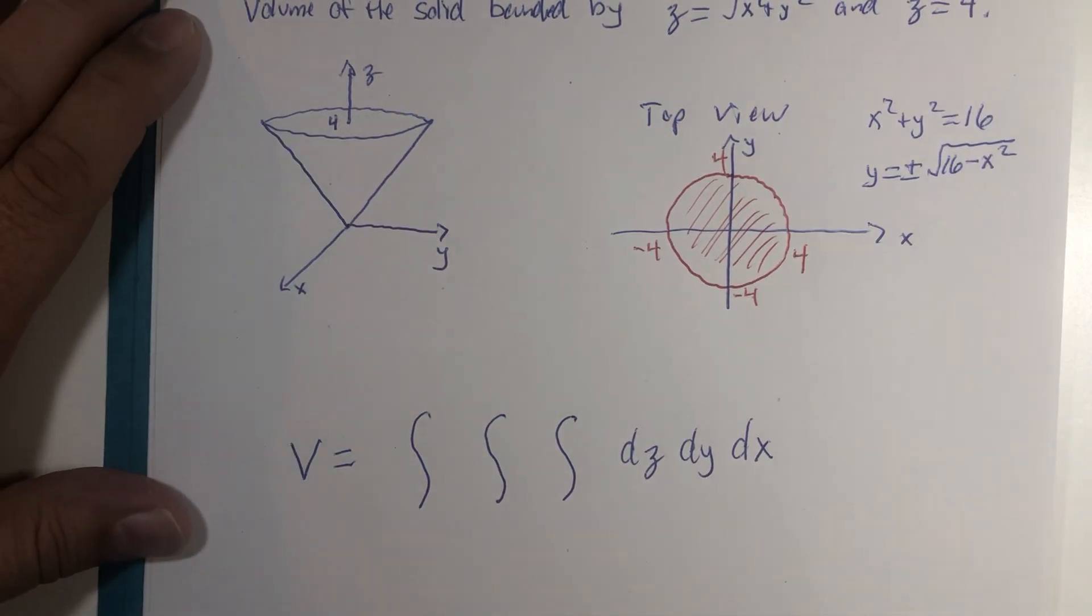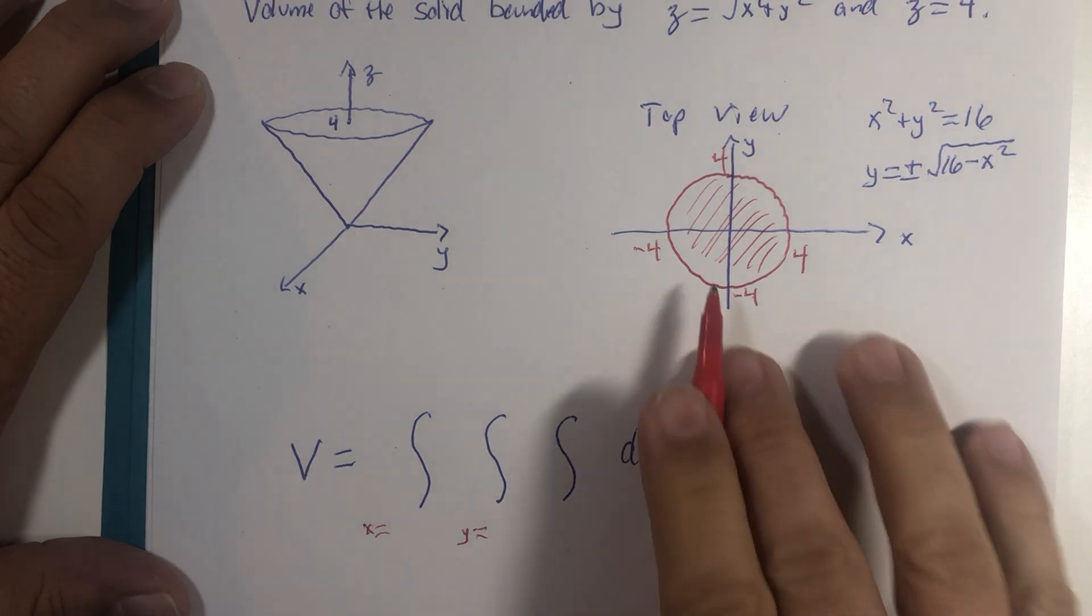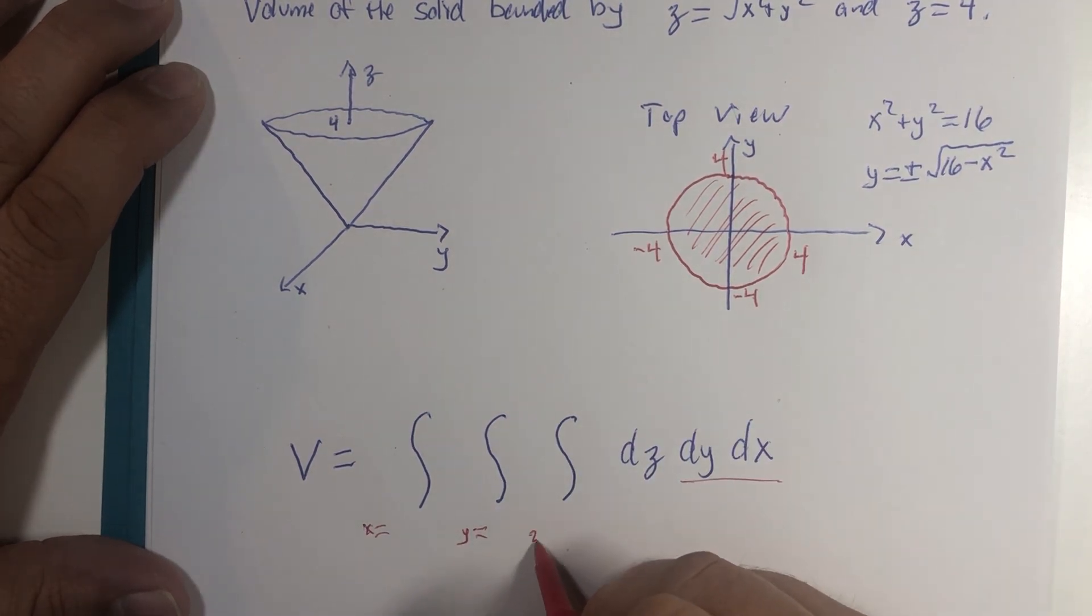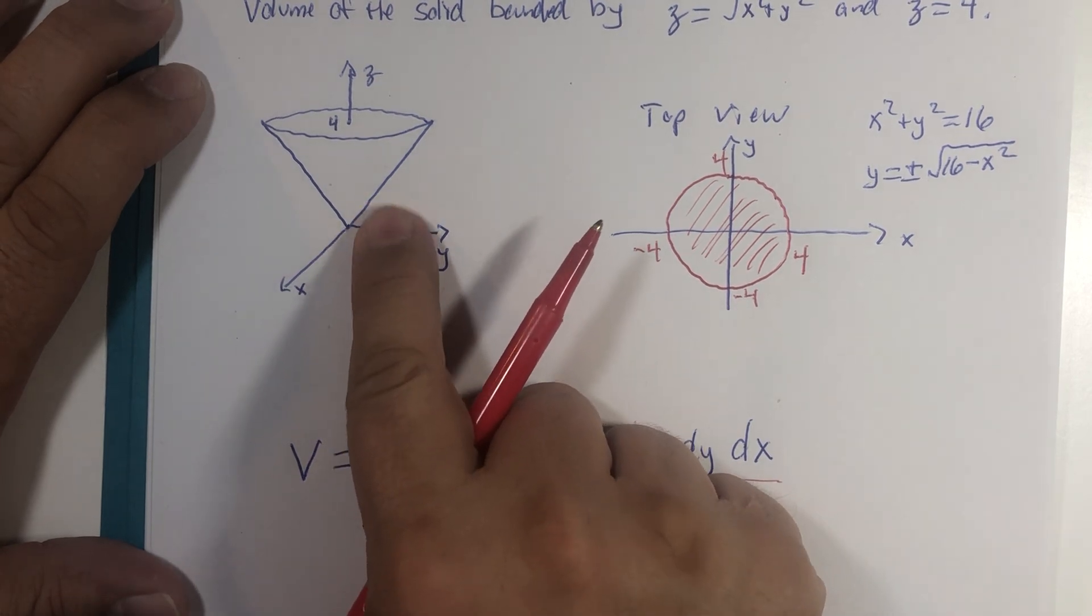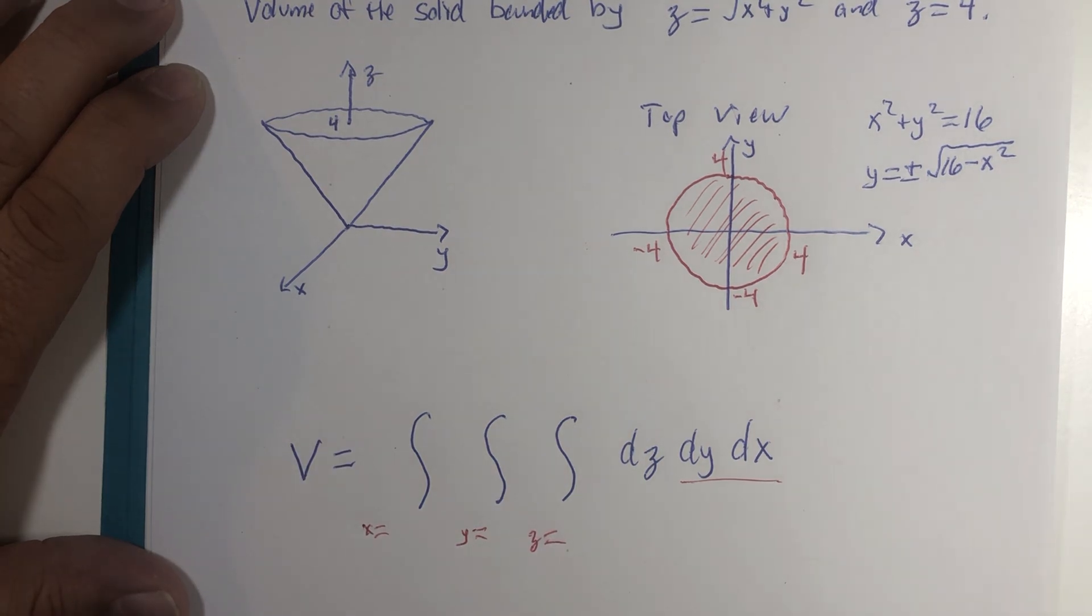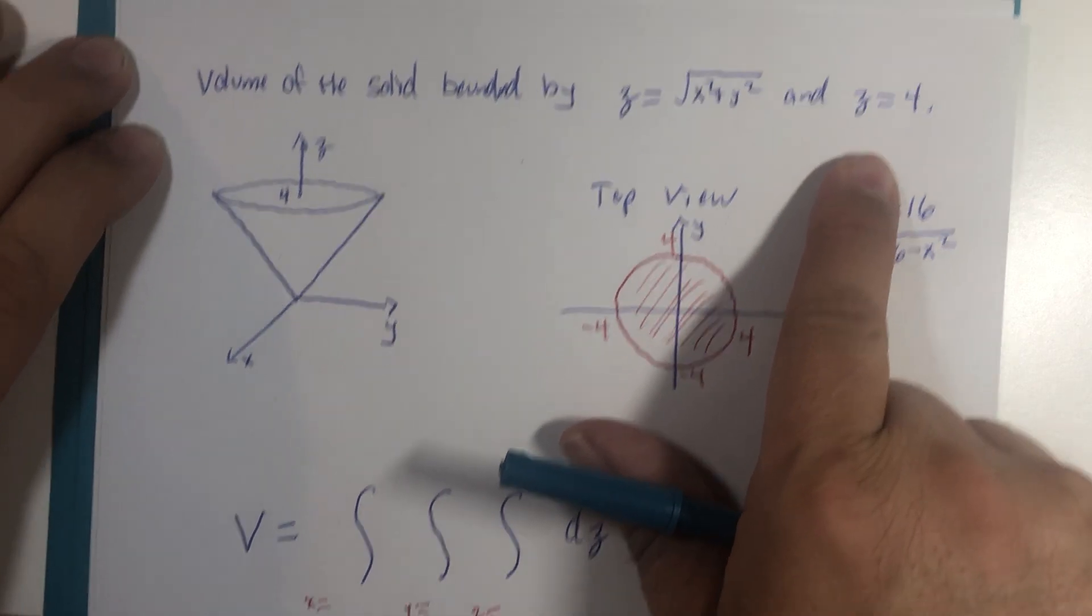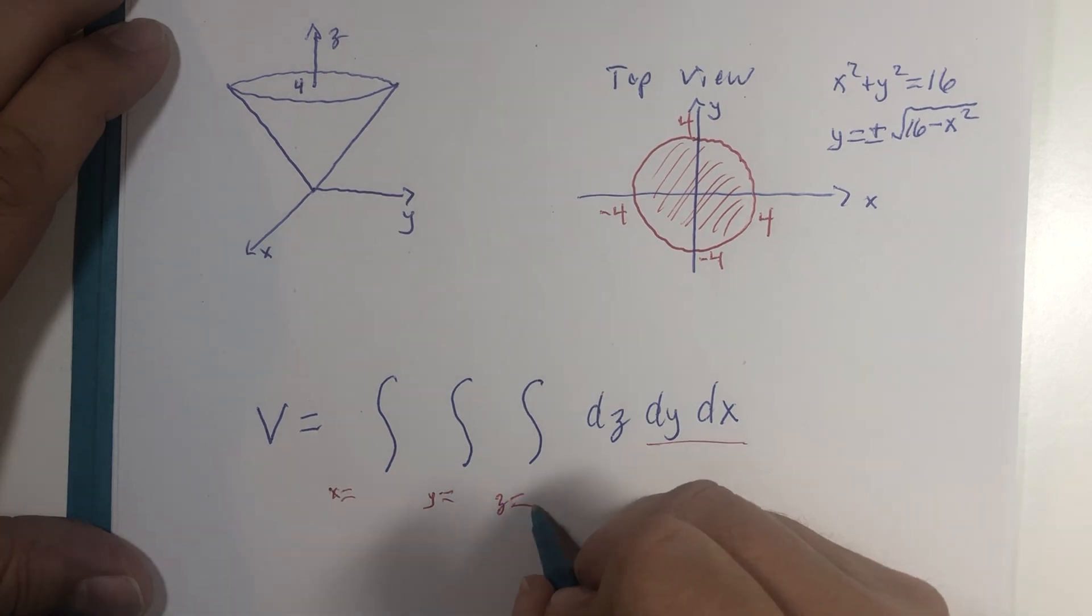So when we want to set up the volume of this cone, we're going to set up our dy dx to represent that circle and our z value to represent the third dimension from the cone to the top boundary of four. I never quite know how to direct students where to begin this little journey, but since we're given z boundaries from the cone to z equals four, I think we might as well just start there.